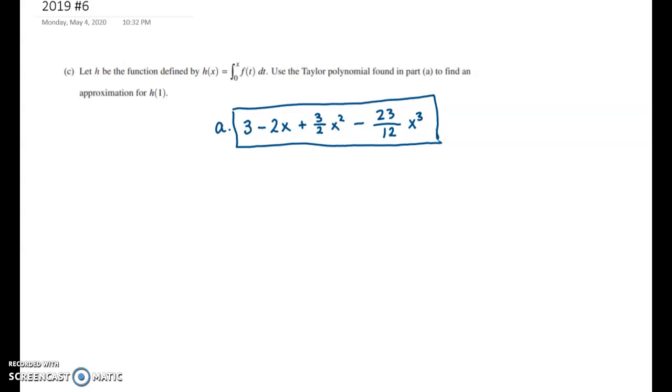So the way I'm going to do that is I'm going to figure out what H of 1 is. Well, H of 1 would be the integral from 0 to 1 of F of t dt. But instead of F of t, I'm going to use my information from Part A. So I'm going to do the integral from 0 to 1 of 3 minus 2t plus 3 halves t squared minus 23 twelfths t cubed dt.